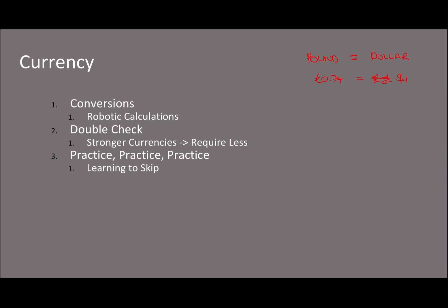You can double-check your answer this way. If you're going from pounds to dollars, the pound is stronger — you can tell because there's less of it — so you're going to end up with more dollars, because dollars is weaker and you need more of it. That's one thing you can do to double-check, and the other thing is practice, practice, practice.